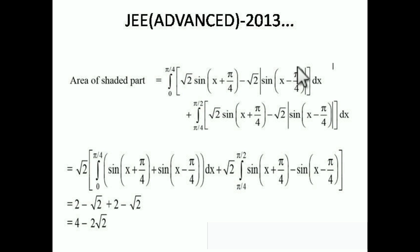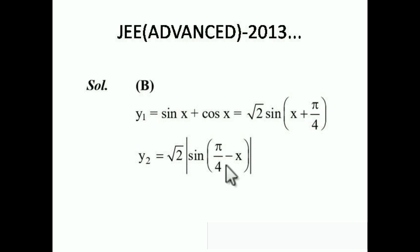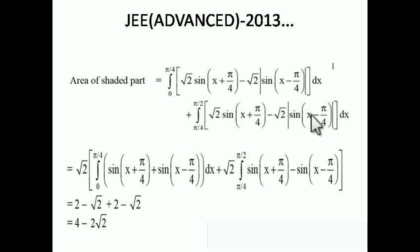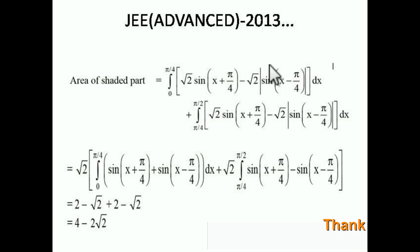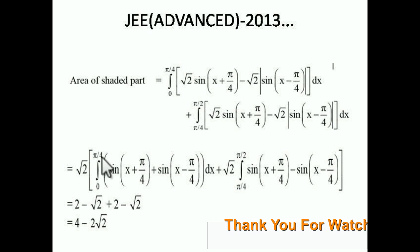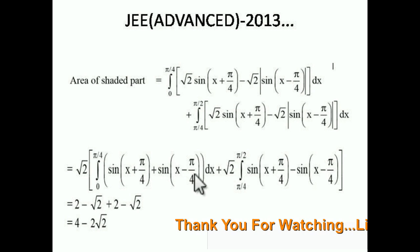Since there is a modulus, I can write π/4 − x as x − π/4 for convenience. For the interval 0 to π/4, the inner expression is negative so the modulus introduces a minus sign, giving: √2 · ∫₀^(π/4) [sin(x + π/4) + sin(x − π/4)] dx. For the interval π/4 to π/2, the expression is positive, giving: √2 · ∫_(π/4)^(π/2) [sin(x + π/4) − sin(x − π/4)] dx. √2 is common throughout.